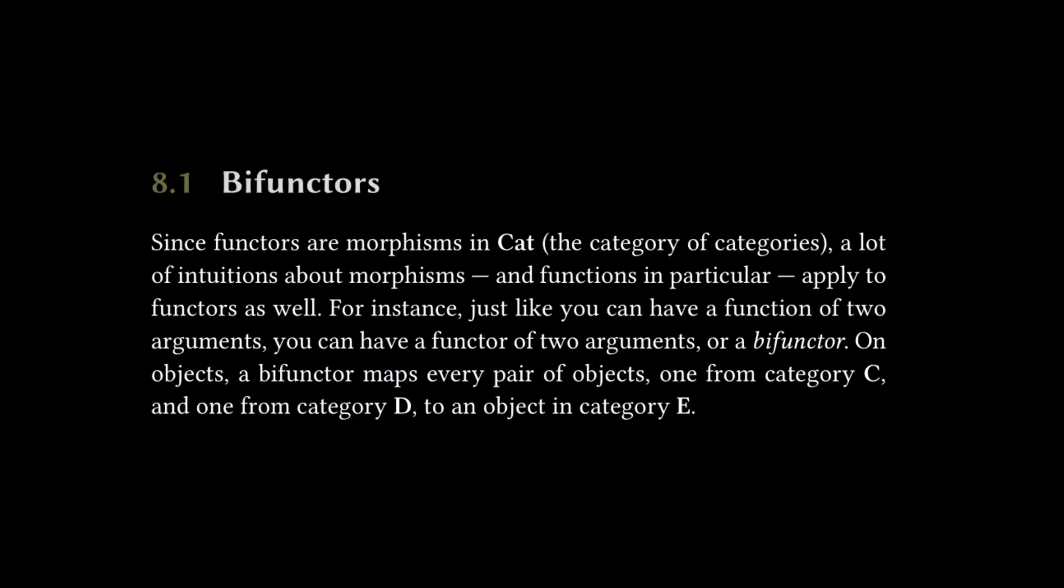So we're going to start off with bifunctors. The text reads: since functors are morphisms in Cat, the category of categories, a lot of intuitions about morphisms and functions in particular apply to functors as well. For instance, just like you can have a function of two arguments, you can have a functor of two arguments or a bifunctor.